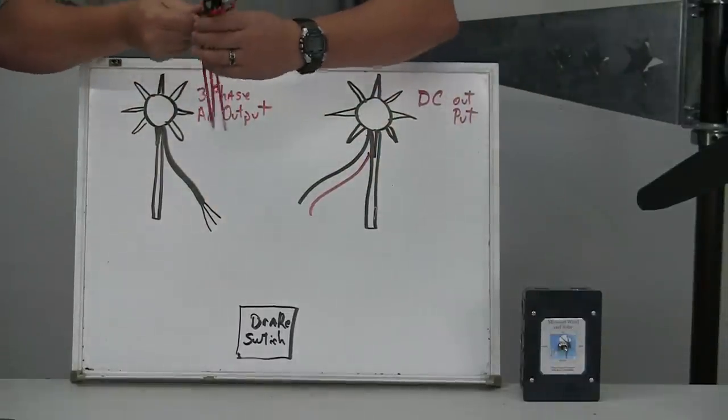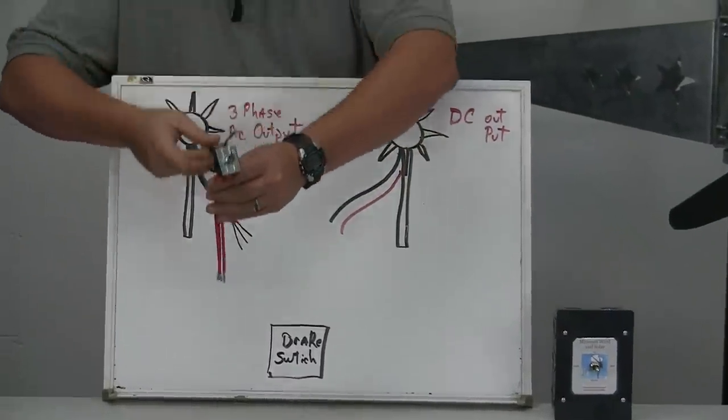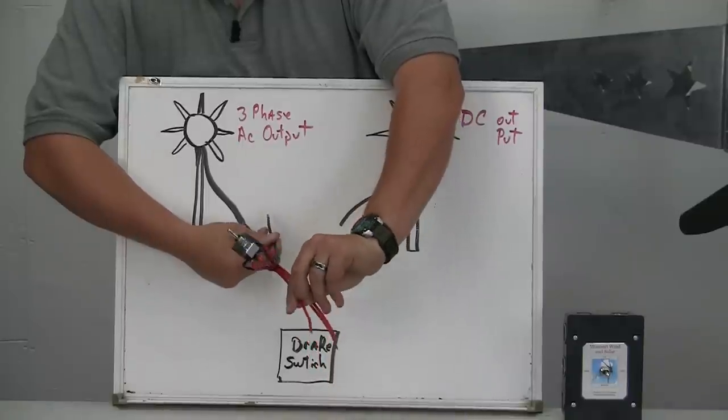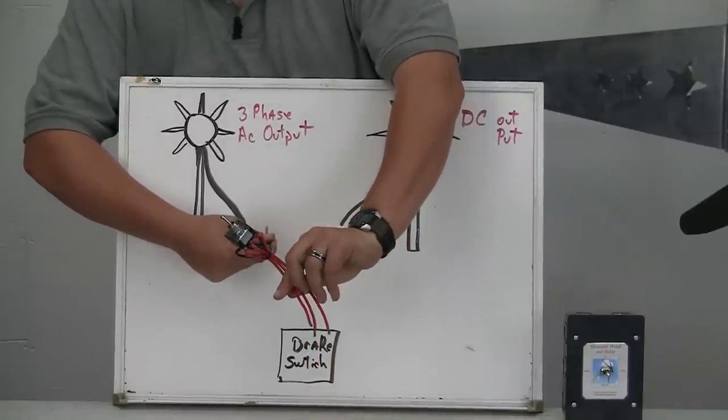Now for the AC wind turbine, you'll use all three. Connect it, it doesn't matter which order it goes in. And then it will go straight to the rectifier to change it over to DC.